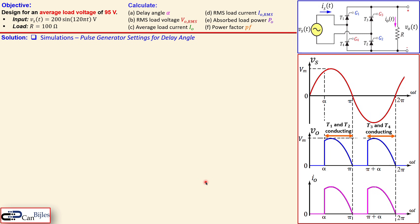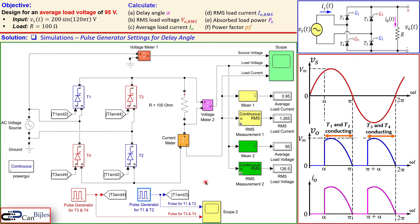Now let's go through the simulation results one by one. This is the circuit in Simulink — we see thyristors T1, T2, T3, and T4, the AC voltage source, and the pulse generators. We also have our load resistor, and we measure the source voltage, the current through the resistor, and the voltage across the resistor, all displayed in a scope.